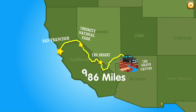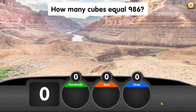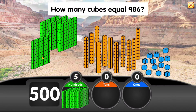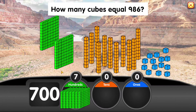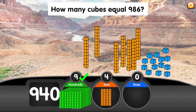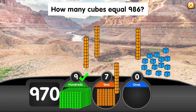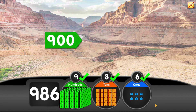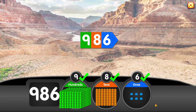We've driven 986 miles. How many cubes equal 986? 900 plus 80 plus 6 equals 986.